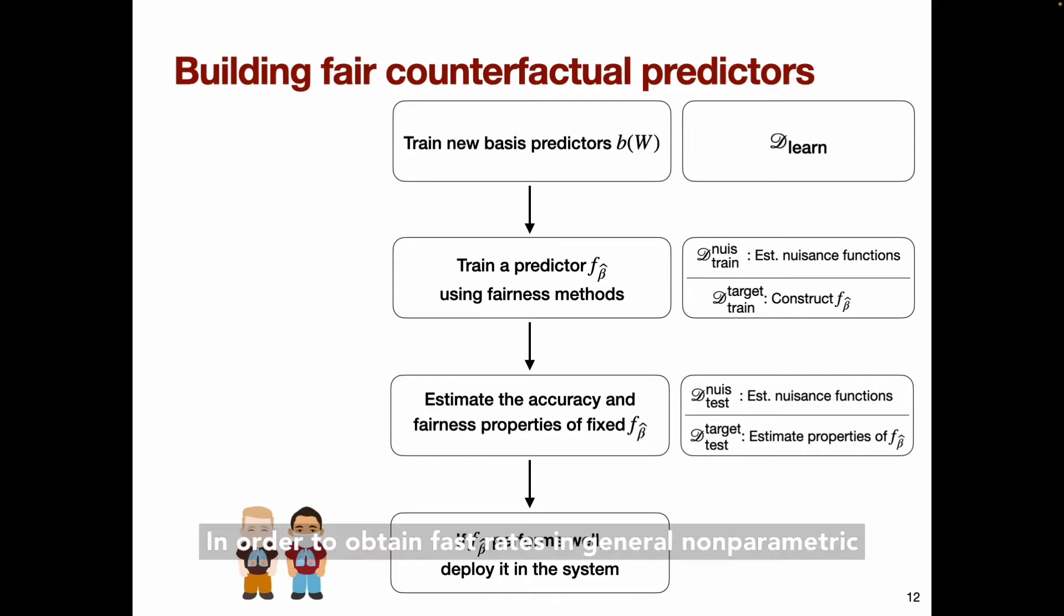In order to obtain fast rates in general nonparametric settings, we'll split the training and test data, estimate the nuisance functions on one half, and then estimate the target parameters on the other half using doubly robust estimators. Actually, we'll do cross-fitting to retain sample size efficiency, but here, for simplicity, I'm just illustrating a single split.